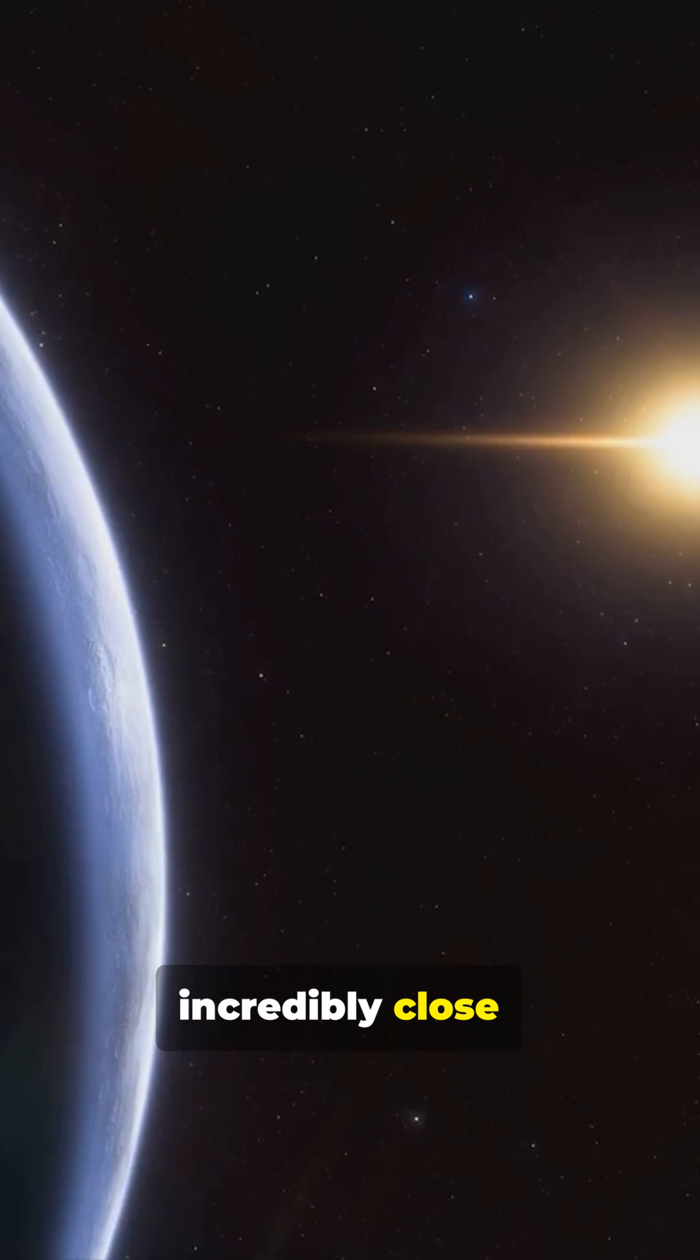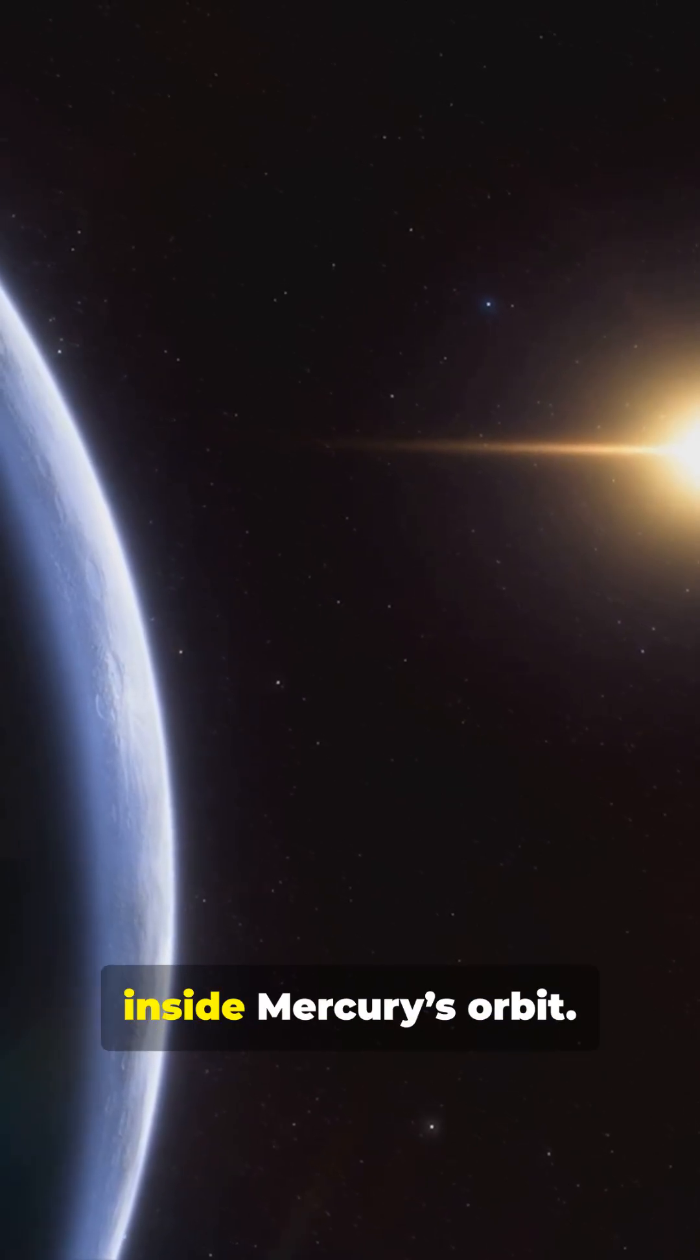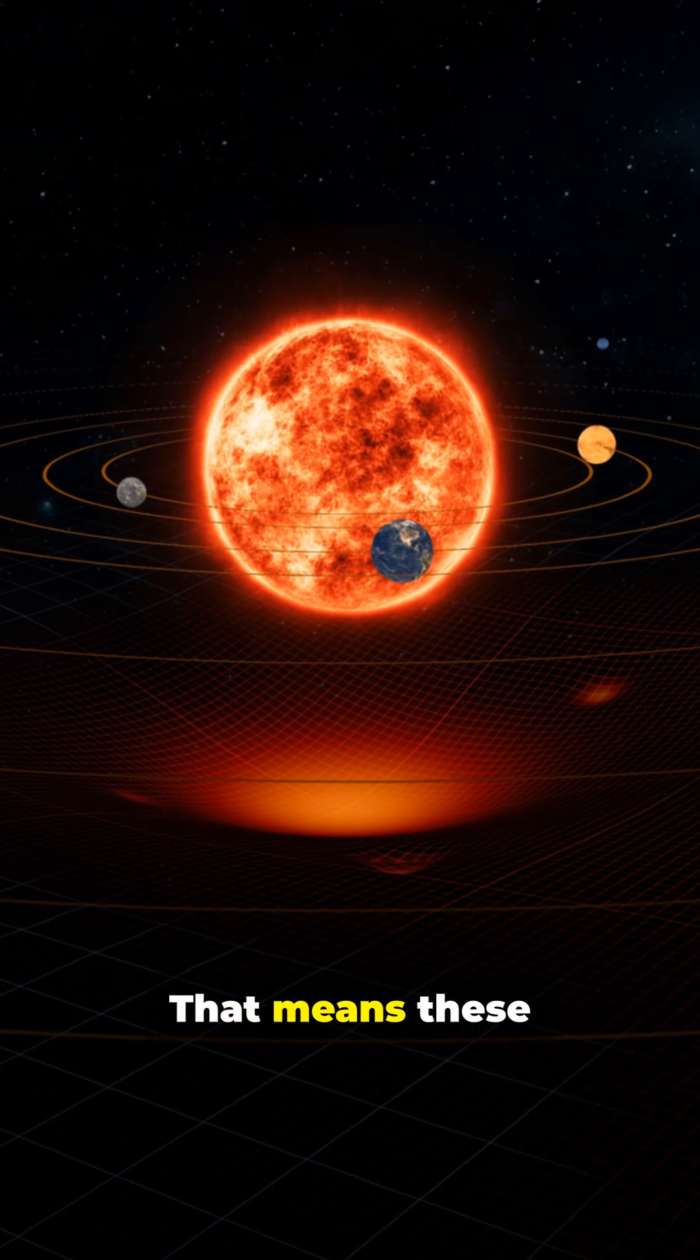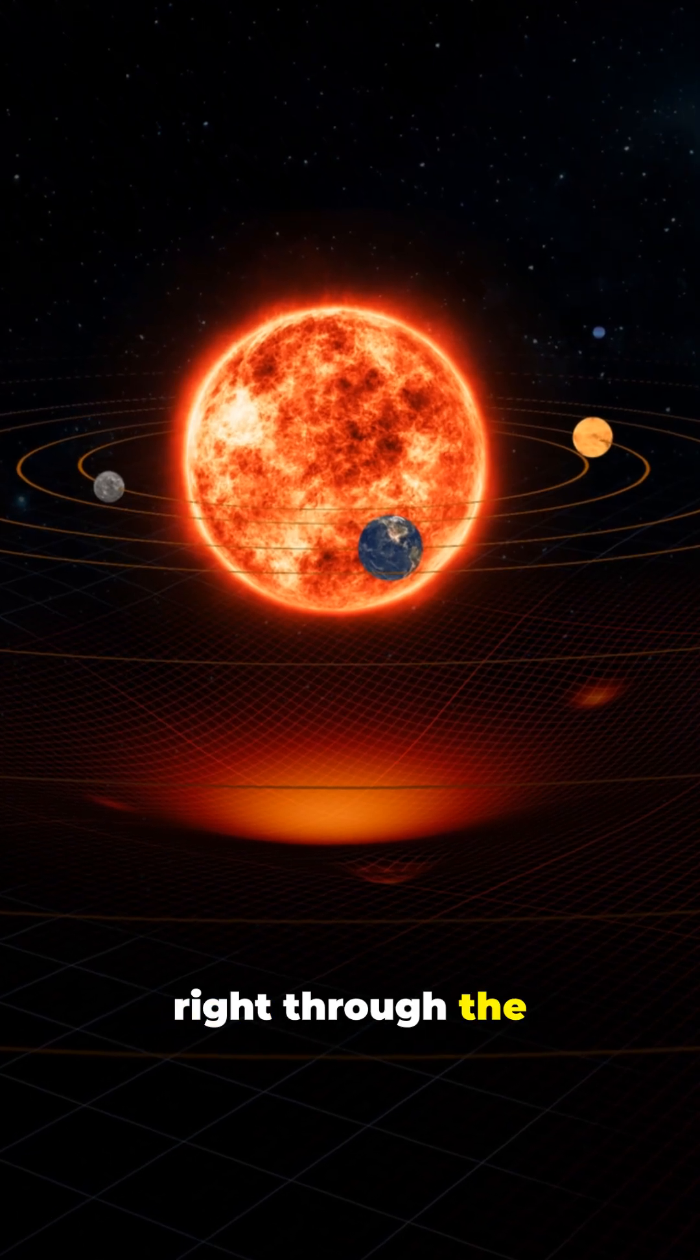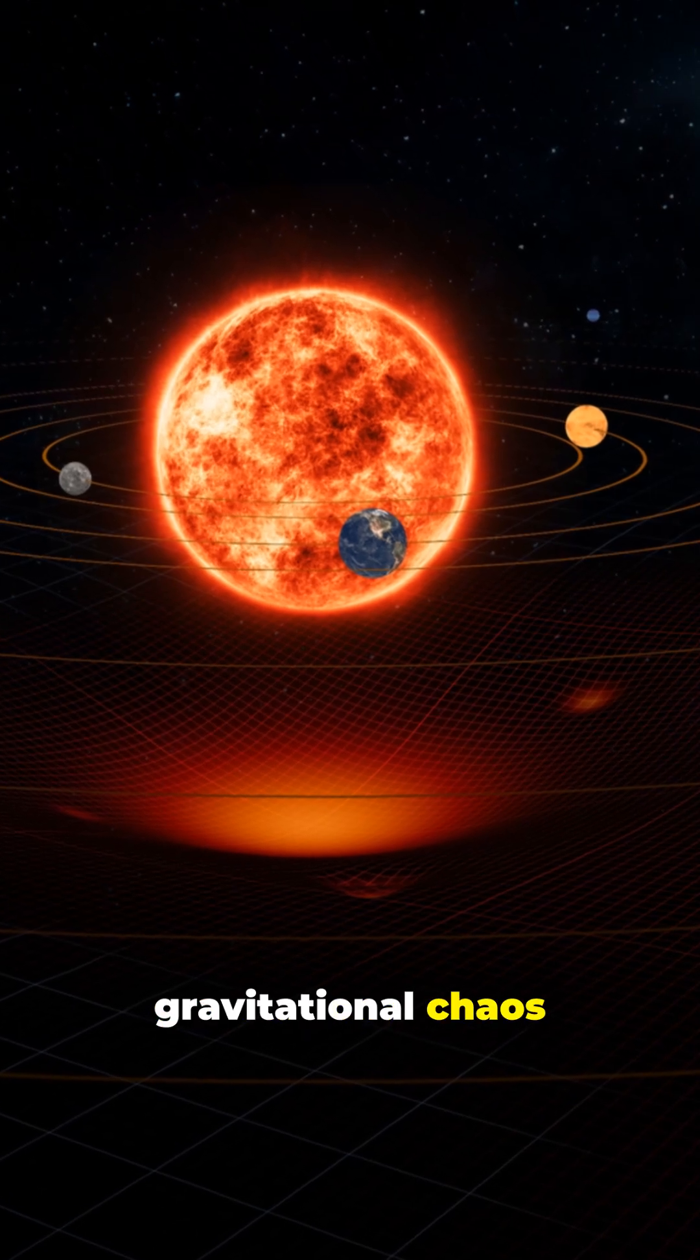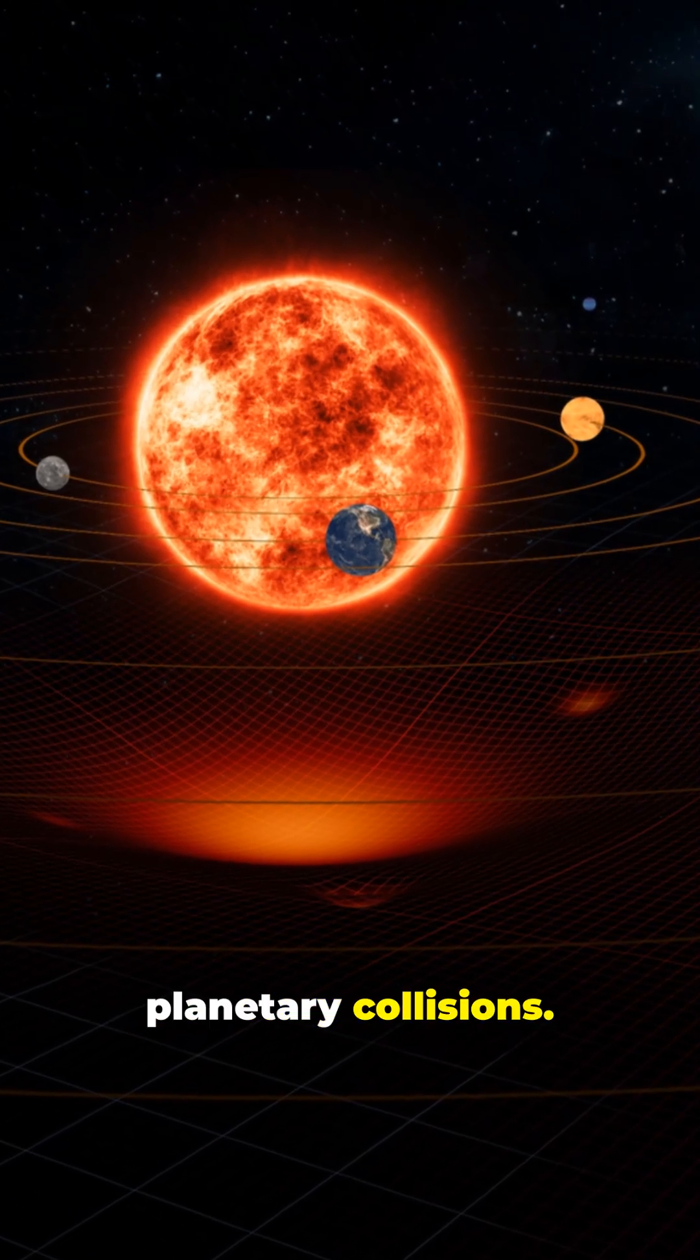They orbit incredibly close. All seven would fit inside Mercury's orbit. That means these worlds would sweep right through the inner solar system, creating gravitational chaos and maybe even planetary collisions.